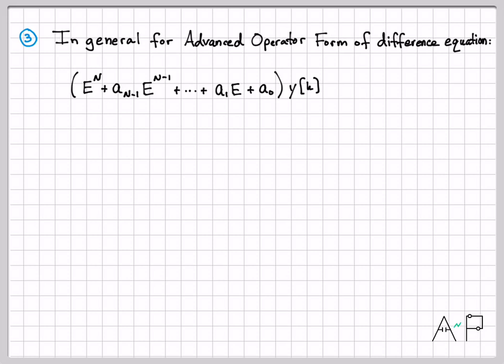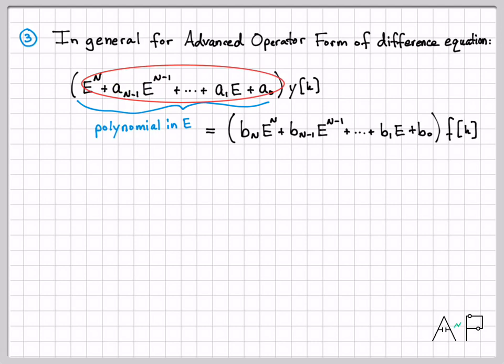So you can still do that transformation and then factor out the y of k, and what you're left with is this polynomial right here. If you do the exact same thing on the right side of the equation, very similar things happen. You have e to the n's, e to the n minus 1's, all the way down to e to the 1, e to the 0, along with the b factors, those coefficients that were weighting the input. So what I have right now is this very compact way of describing a difference equation in terms of really a polynomial in e. Usually when I think of polynomials, I think of x squareds and x cubes, but it doesn't have to be x, it can be other variables. So in this case, we have a polynomial in e.